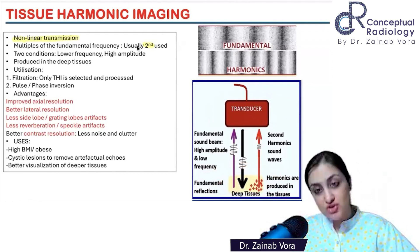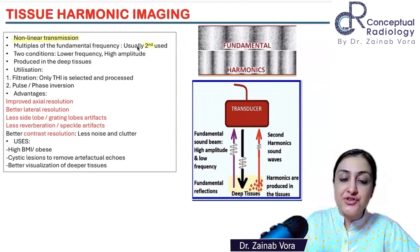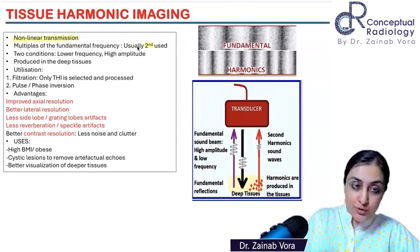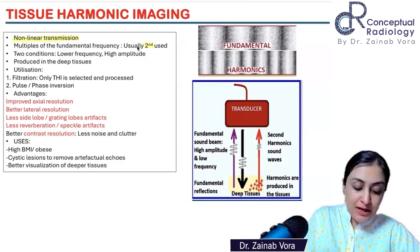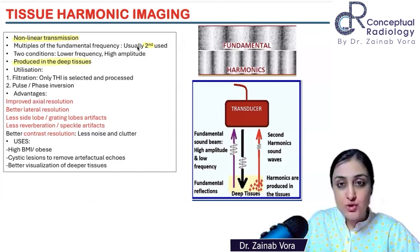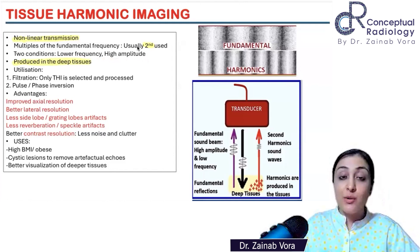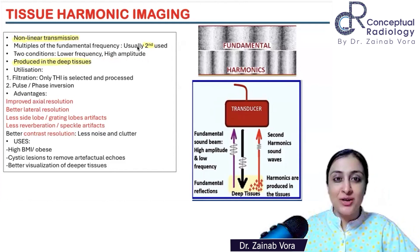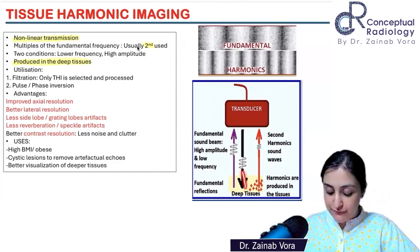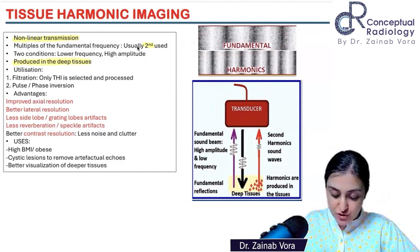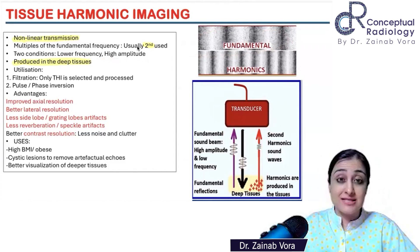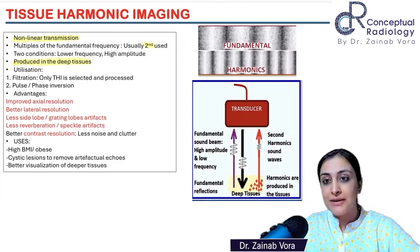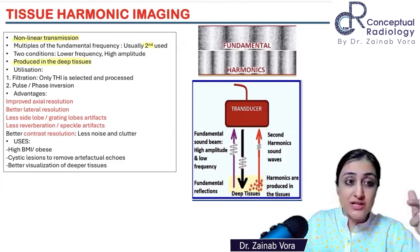Harmonics are physiological — it's not something the transducer generates. The advances are that we are now able to pick up the harmonics. What you need to remember is that harmonics are generated by the tissue, and it's the deeper tissues that generate them. Two conditions: they are low frequency and high amplitude. We are interested in a lower frequency for harmonic imaging. They are not produced by the transducer — they are produced by the deep tissue itself. There is a separate knob or button for this on all machines.